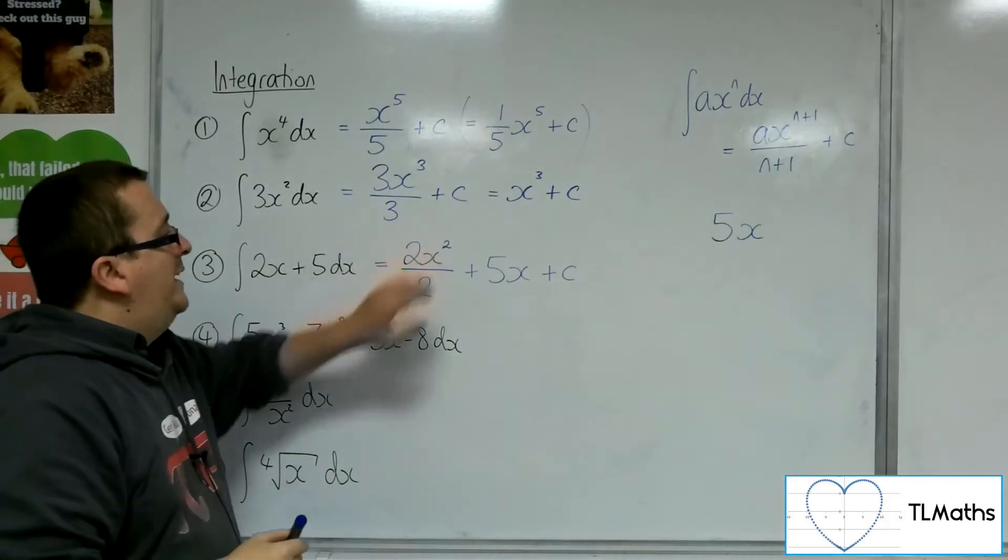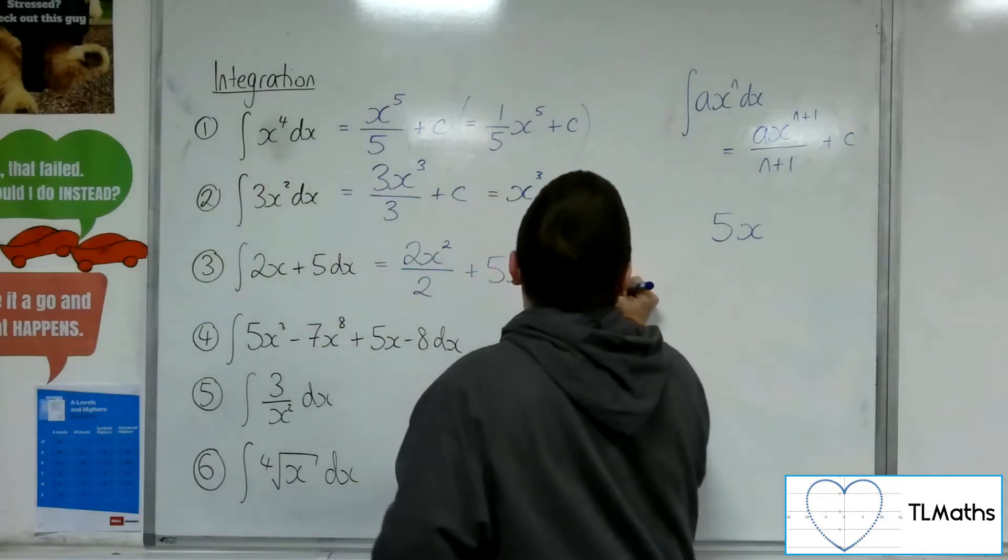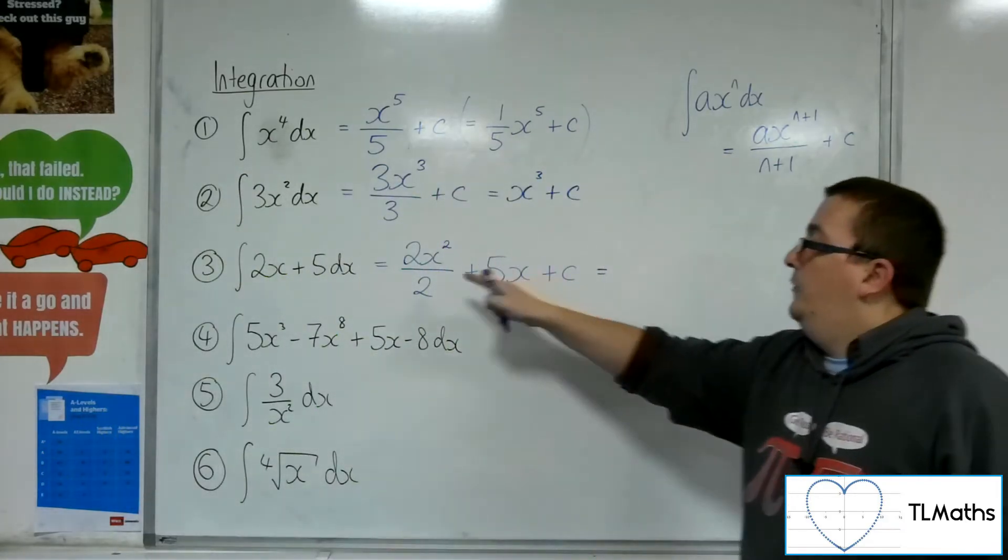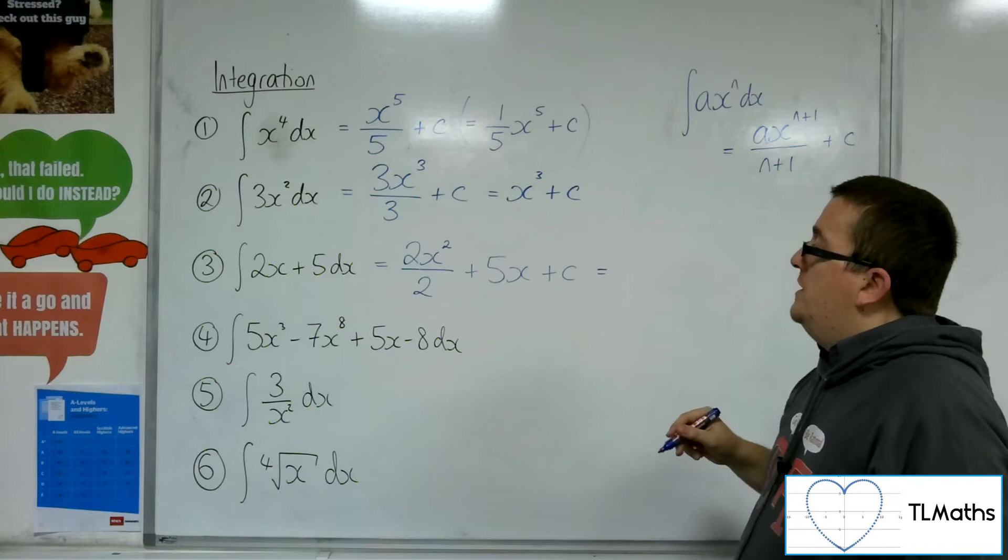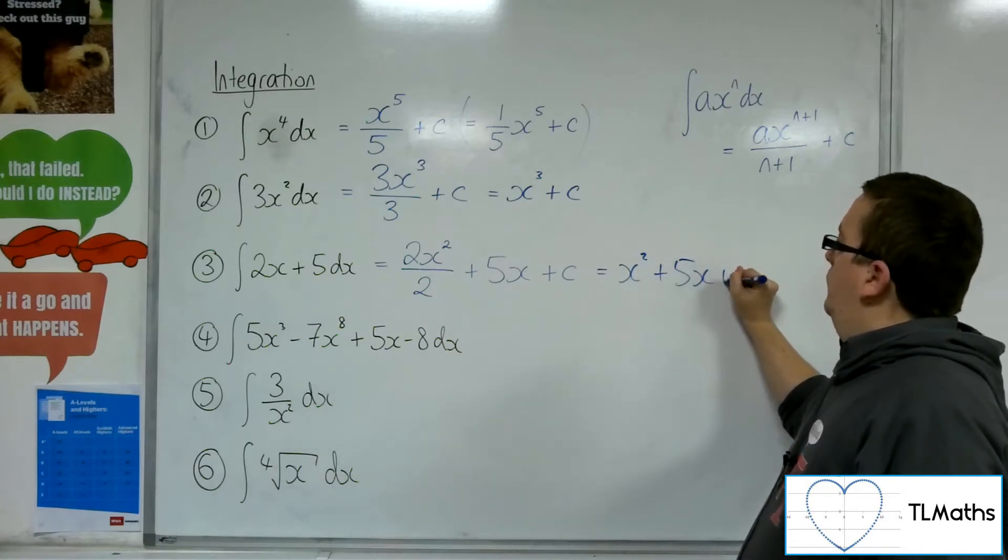Now, we wouldn't want to leave that 2x squared over 2 like that in much the same way as for number 2. So, let's get rid of that. Let's simplify that fraction down, and we just have x squared plus 5x plus c.